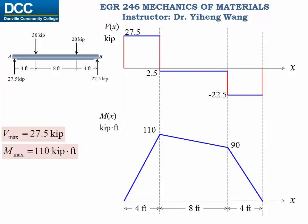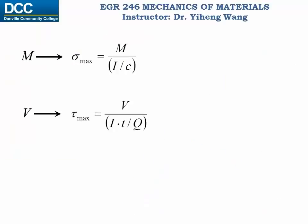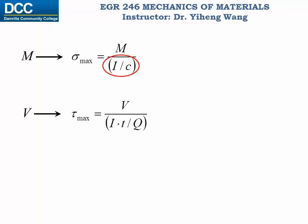The question is how do we use this information to decide on a sectional shape for this beam? At this point we should be familiar with the flexure formula as well as the shear formula. I used to rewrite these two formulas to clearly demonstrate that the stresses are caused by the internal reactions on the numerator and resisted by the combined geometric properties on the denominator. Since the bending stress is dominant, we define a new geometric property called the section modulus S, which simply equals I over C for a given cross section.